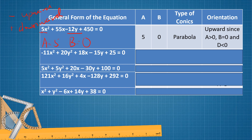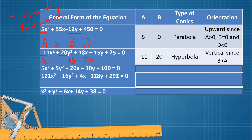For the next example, A equals negative 11, and B equals 20. Since A and B are not equal and have unlike signs, the type of conics is hyperbola. The orientation is vertical because 20 is positive and it is the numerical coefficient of y squared. For the third example, A equals 5 and B also equals 5. Since A and B are equal, the type of conics is a circle, and there is no orientation.